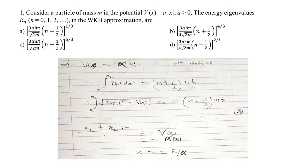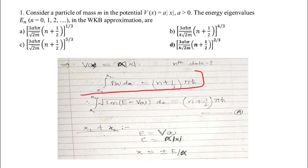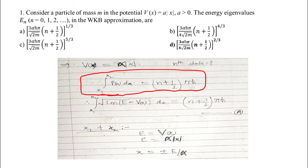Problem 1: Consider a particle of mass m in the potential V(x) = A|x|, where A > 0. Find the energy eigenvalues En (n = 0, 1, 2, ...) in the WKB approximation. So the potential is given as V(x) = α|x| (here I've written α where the question has A — consider them the same). The main WKB formula to write first is: the integral from x1 to x2 of p(x) dx = (n + 1/2)πℏ, where p(x) = √(2m(E − V(x))).